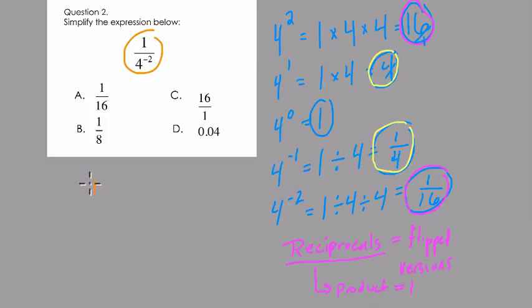Let me just pick the right color so you can see this. 1 over 4 to the negative 2nd. That means 1 over 1 sixteenth. Right? We just said that 4 to the negative 2nd is 1 over 16.